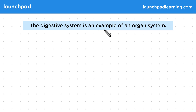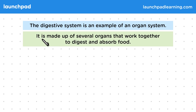The digestive system is an example of an organ system. It's made up of several organs that work together to digest and absorb food. Remember, the digestive system is something that you will have studied in Key Stage 3 Science, and your GCSE Biology course assumes that you remember this. Don't panic too much though — if you aren't so fresh on the knowledge, this video will give you a recap.